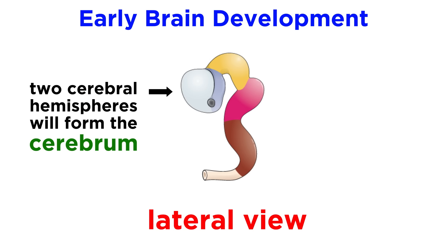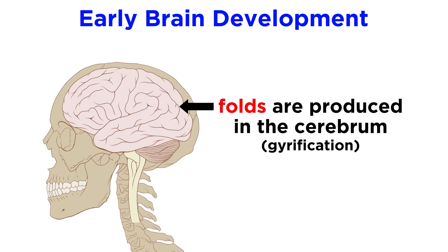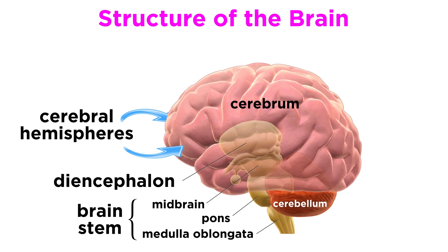The telencephalon sprouts two lateral regions called cerebral hemispheres, which together form the cerebrum, and the midbrain and hindbrain segments collectively become the brainstem. Confined to the volume of the skull, the fast growing brain produces many folds — a process called gyrification — in order to best occupy the available space. This eventually results in the representation of the brain we are all familiar with, which we typically divide into four main regions: the cerebral hemispheres, diencephalon, brainstem, and cerebellum.